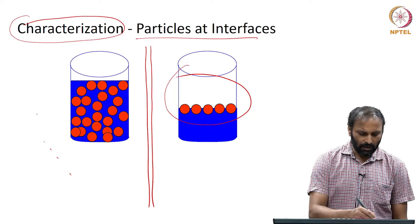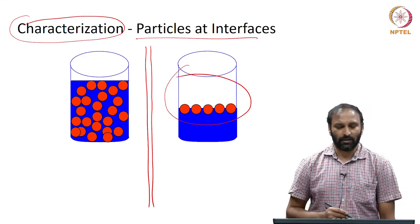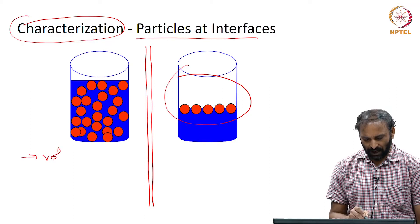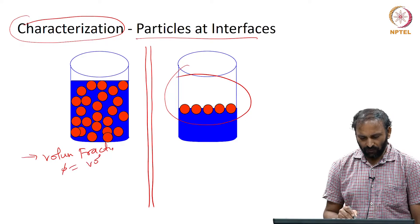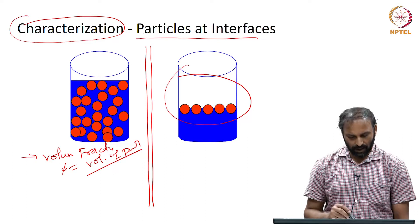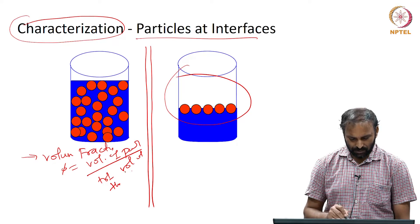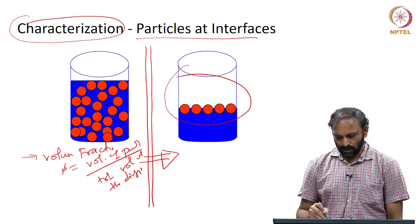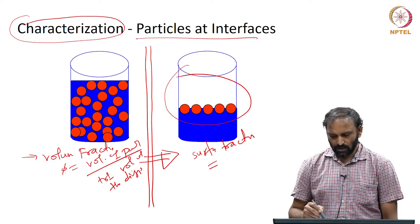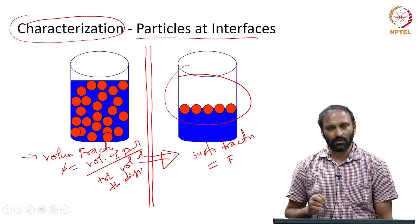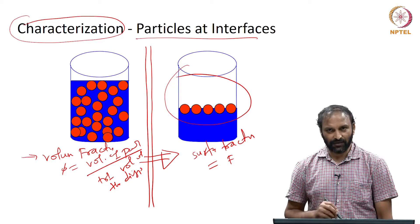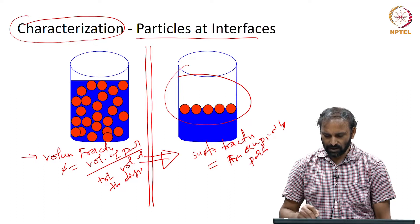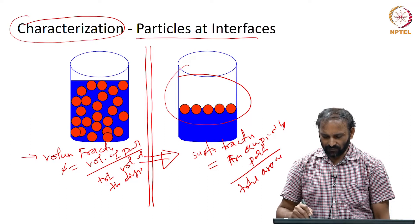While in the bulk, one of the important parameters used to characterize particles in a fluid is what is called volume fraction, which is the volume of particles divided by the total volume of the dispersion. An analogous parameter for colloidal interfaces would be what is called surface fraction — that is, the fraction of the surface that the particles occupy at the interface.